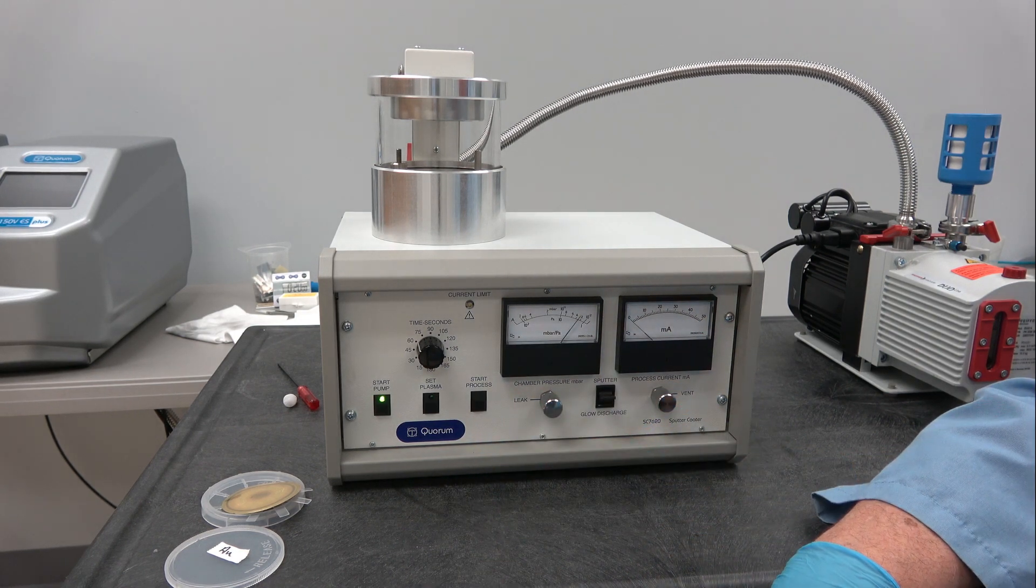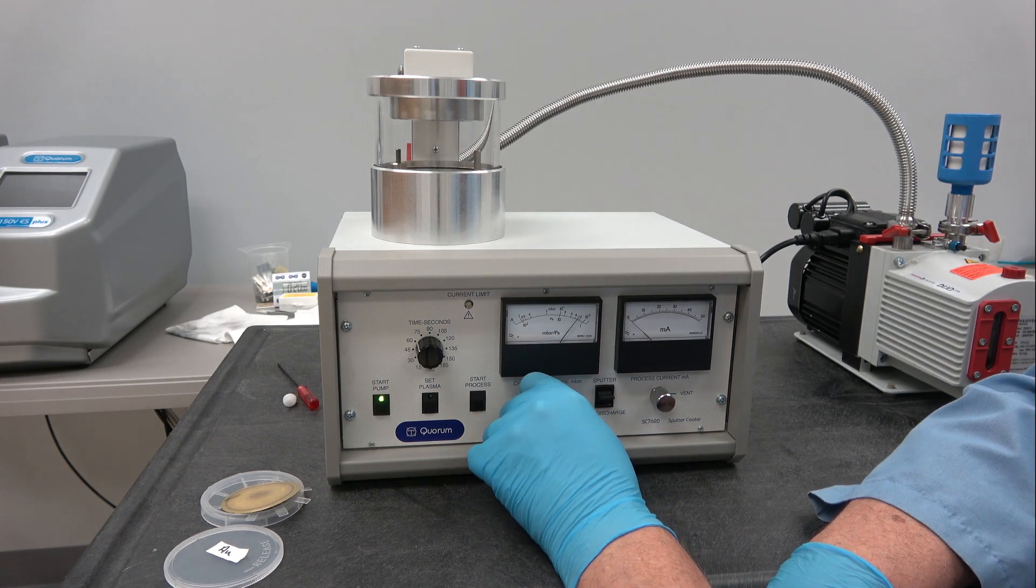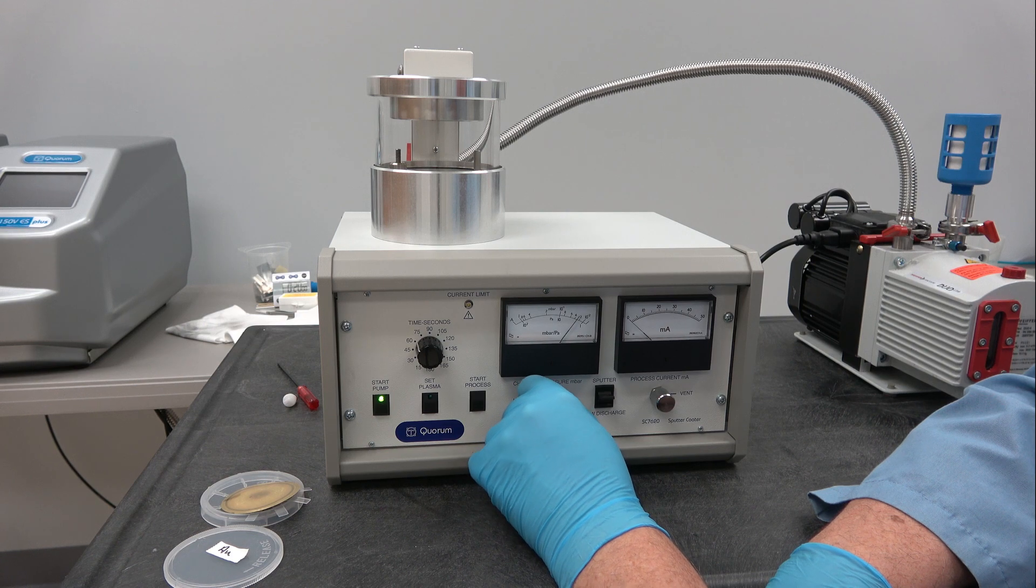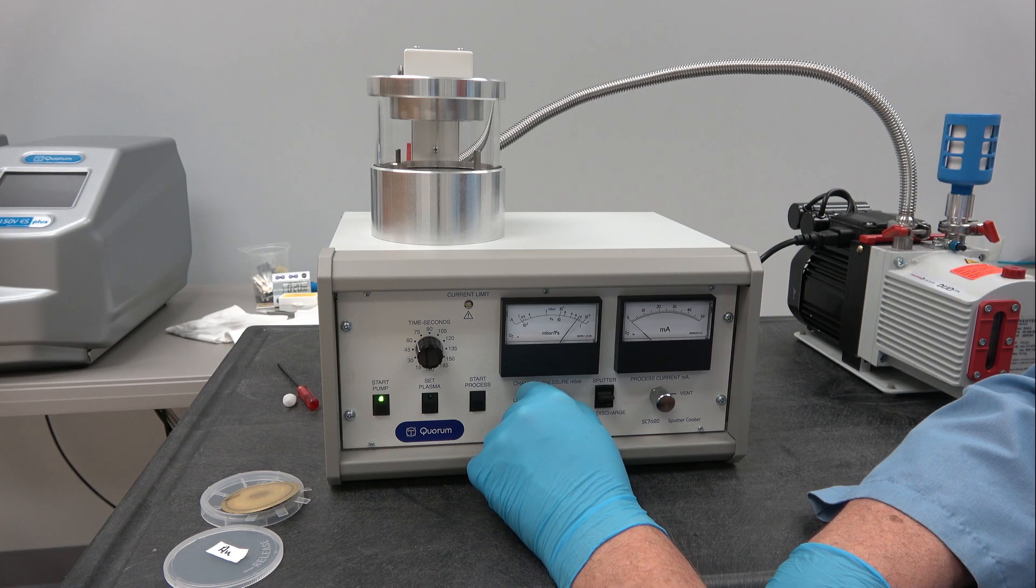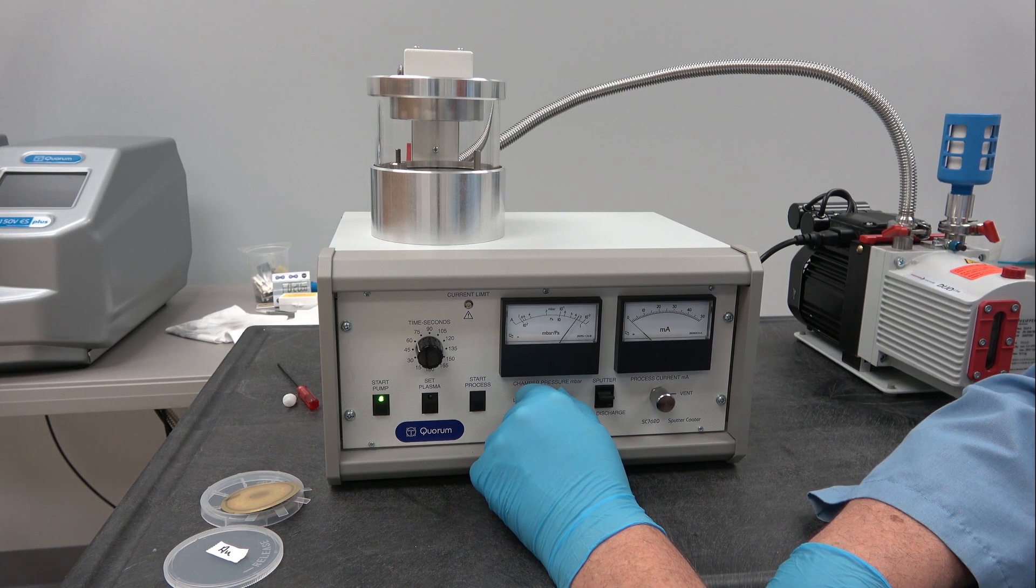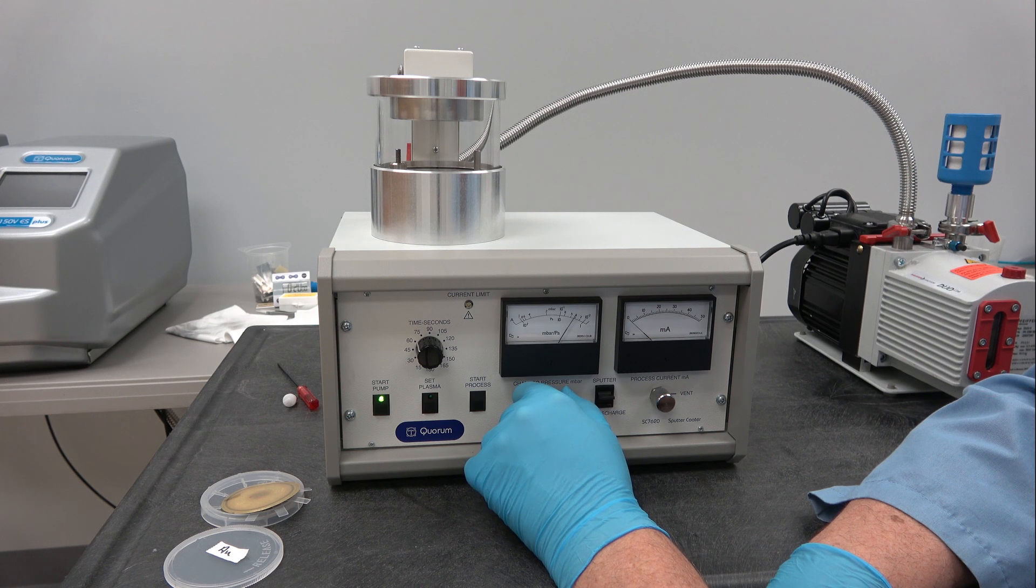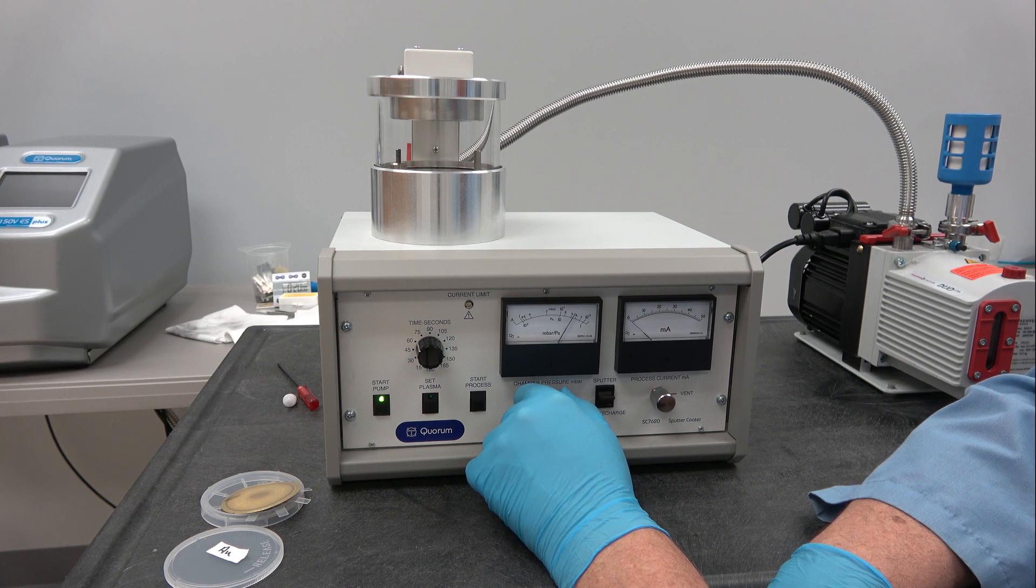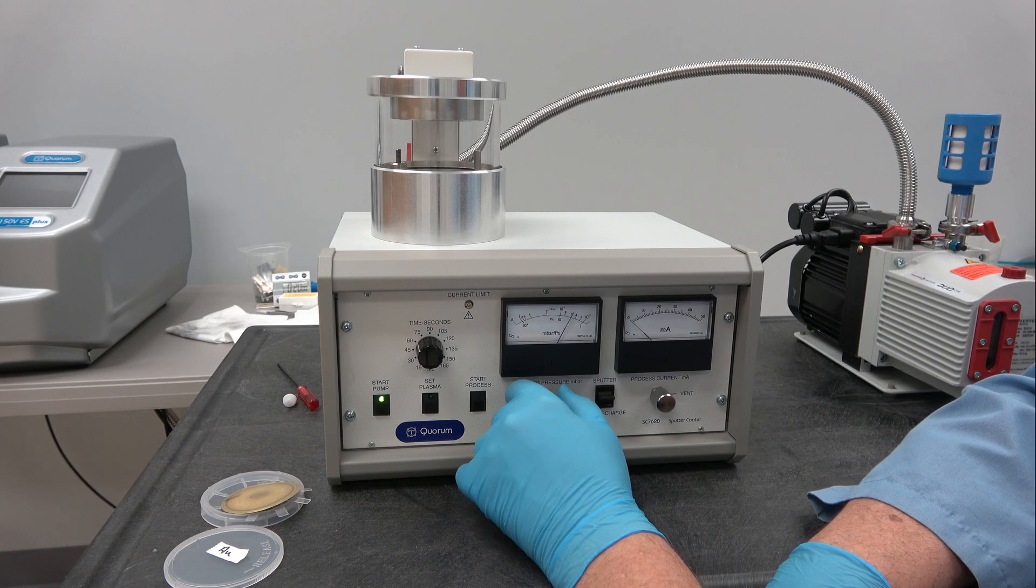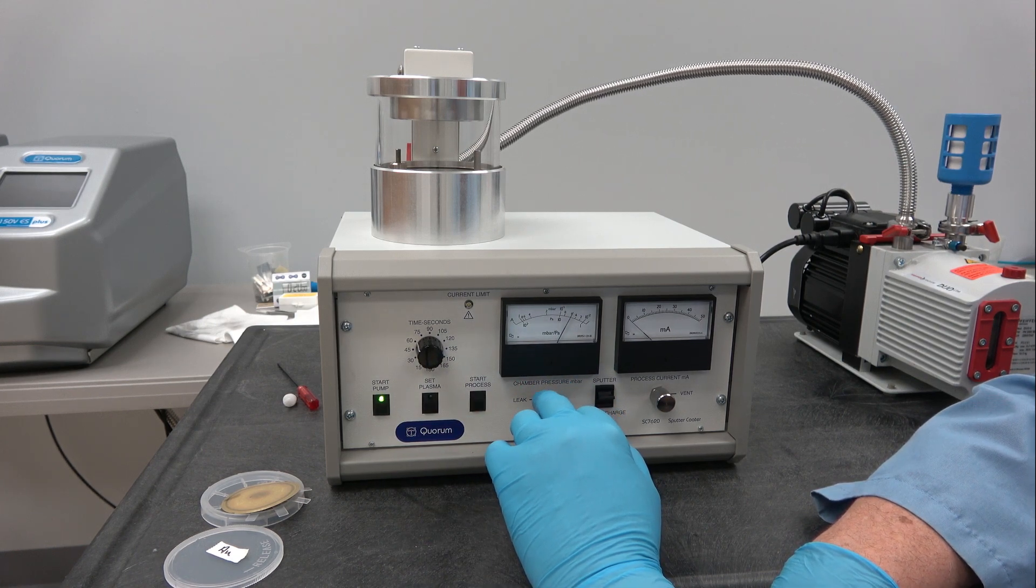So in order to get the system to sputter, you need to increase the argon gas pressure in the chamber a little bit. And we'll set it around 0.6 or 0.7. It will take a little bit of time to get used to that.